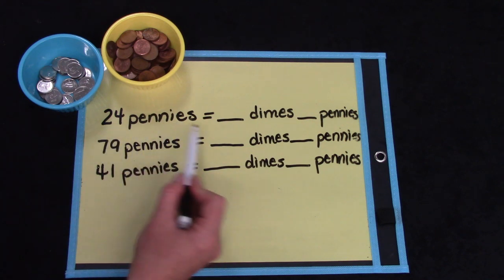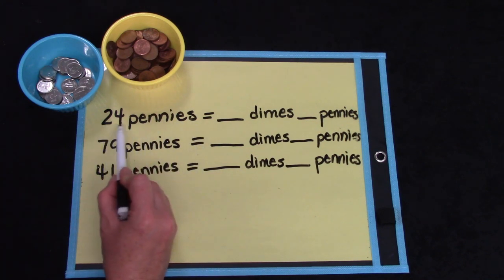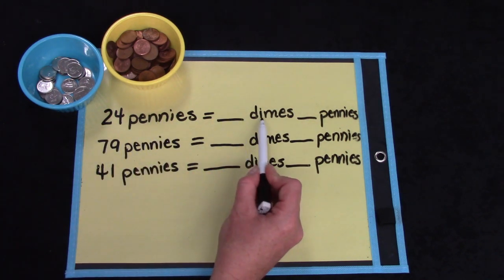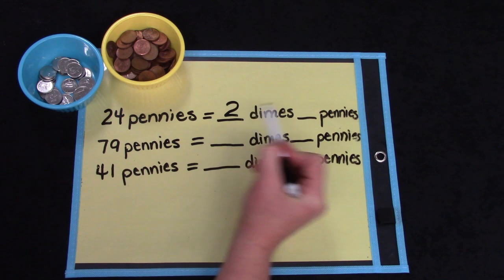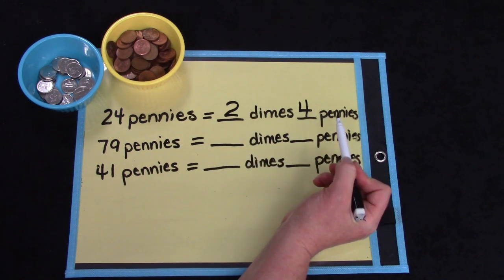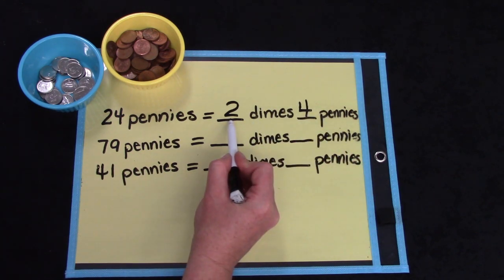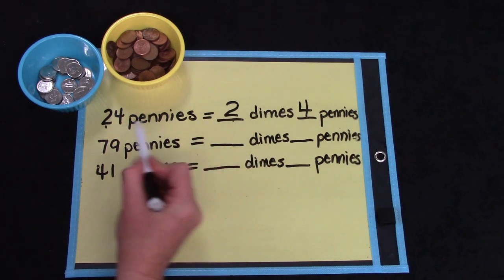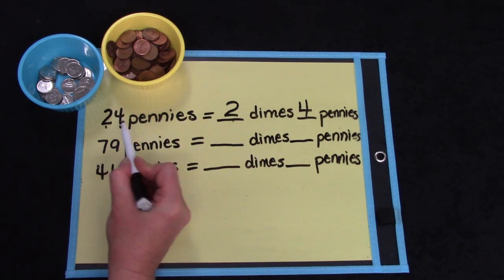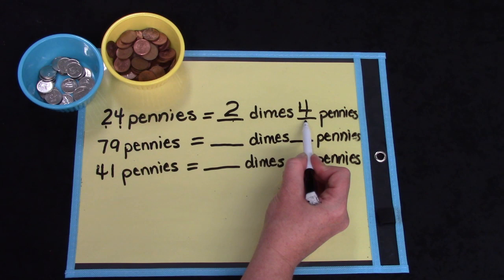Let's try to do some of these questions together. If we have 24 pennies, how many dimes do we have and how many pennies? Did you say two dimes and four pennies? We have two dimes because the two is in the tens place. It's telling us how many groups of ten or how many dimes. And the four is in the ones place, telling us how many cents or pennies there are.